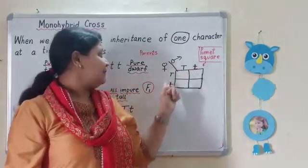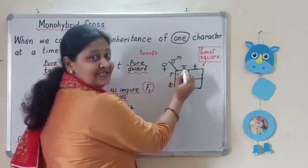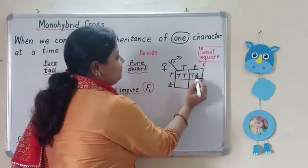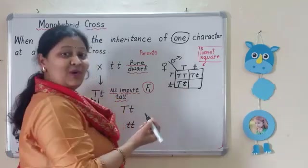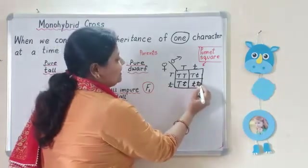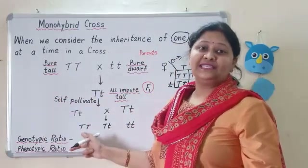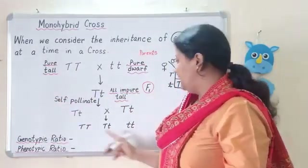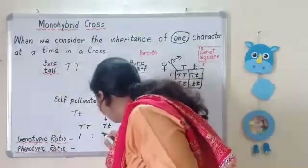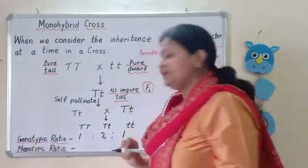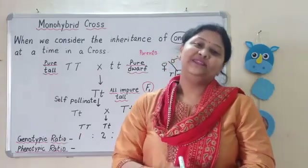Now we will see how we form the combinations in the Punnett square. Capital T capital T, then capital T small t, then small t and capital T — but since we write the dominant allele first, it is capital T small t — and finally small t small t. So the combinations are: capital T capital T = 1, capital T small t = 2, and small t small t = 1. This is the genotypic ratio of the monohybrid cross: 1 is to 2 is to 1.